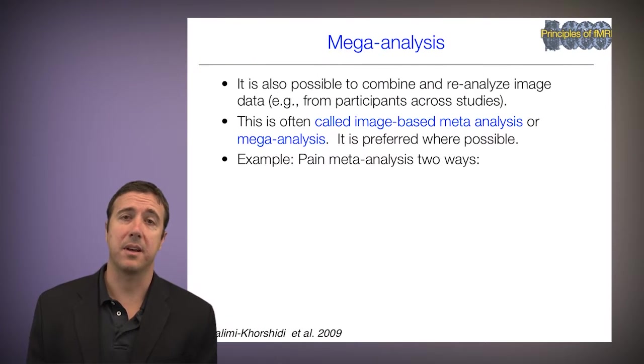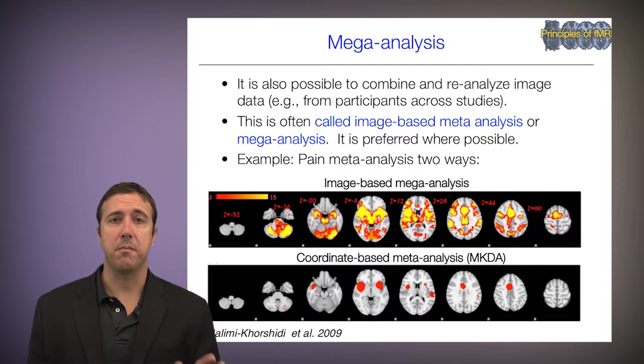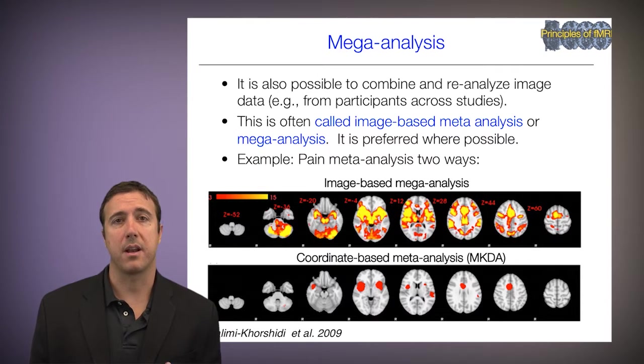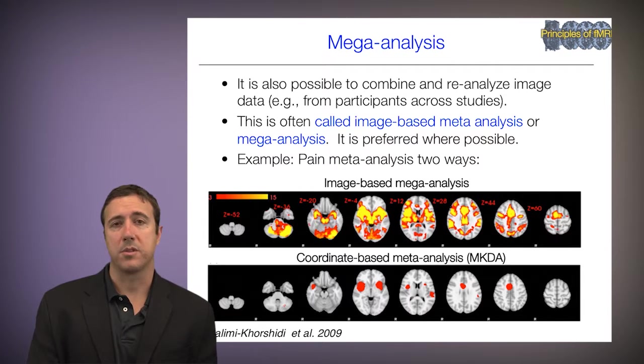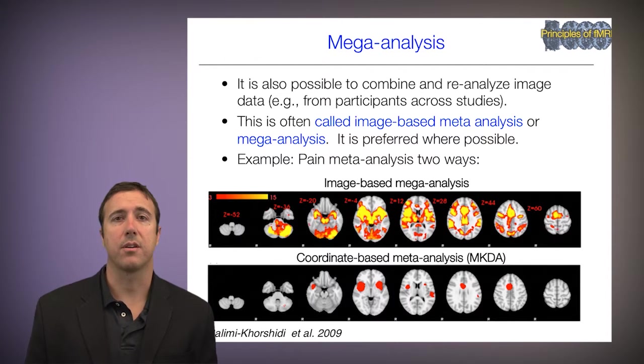A similar concept is called mega-analysis. It's often possible to combine image data and reanalyze image data from participants across many studies — this is often called image-based meta-analysis or mega-analysis. This is actually preferred over coordinate-based meta-analysis where possible, because it's much richer in information — we have effect sizes across every voxel in the brain. For example, here's a pain meta-analysis done two ways: on top is an image-based mega-analysis, and on the bottom is a coordinate-based meta-analysis. At its heart, any coordinate-based meta-analysis attempts to reconstruct what the maps look like and then test for consistency across studies.